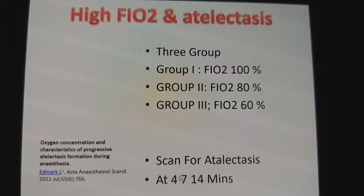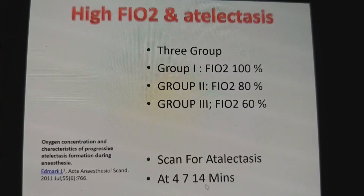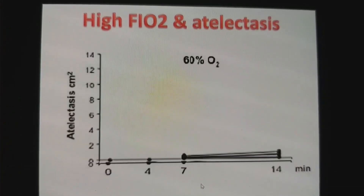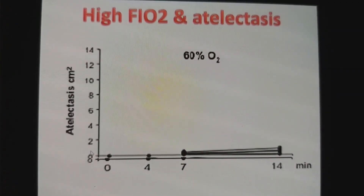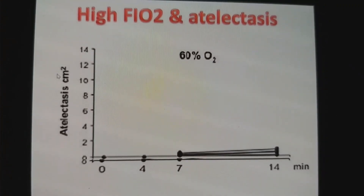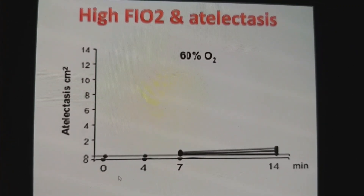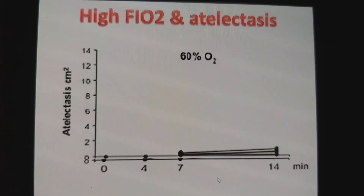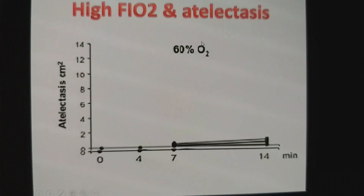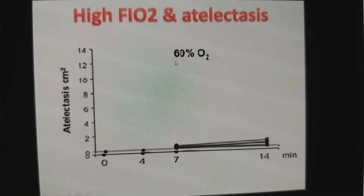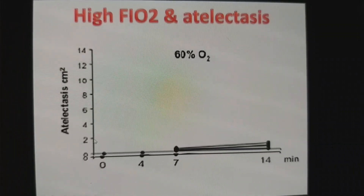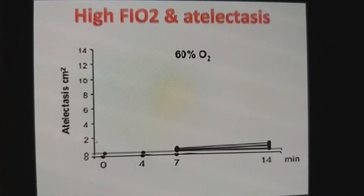They took scans at 4-minute, 7-minute, and 14-minute intervals after pre-oxygenation. The vertical axis shows the amount of atelectasis in cm², and the horizontal axis shows the duration of pre-oxygenation. With 60% FiO2, the amount of atelectasis was less than 2 cm².